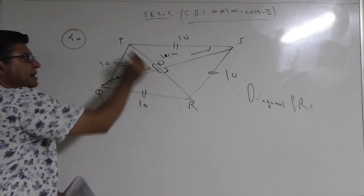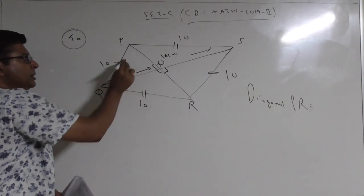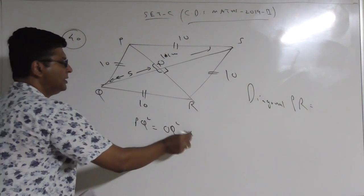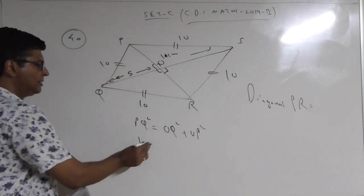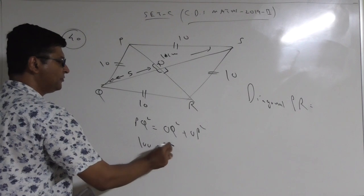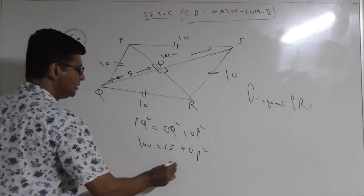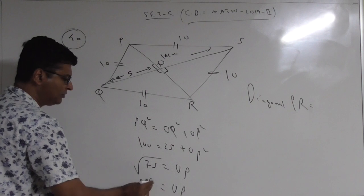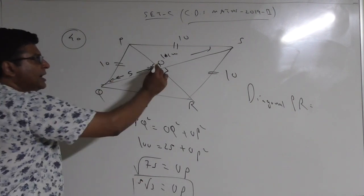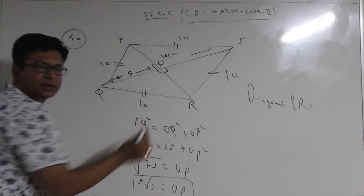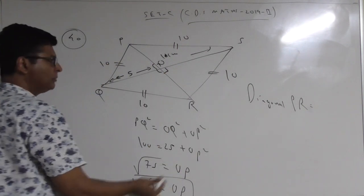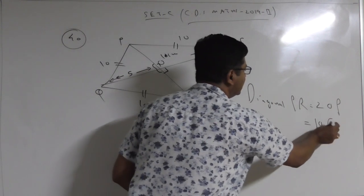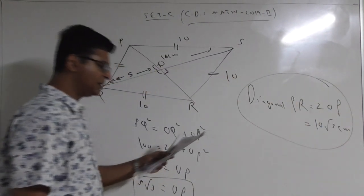To find the length of diagonal PR, use Pythagoras theorem. Since this is a right angle triangle at O: PQ² = OQ² + OP². PQ = 10, so PQ² = 100. OQ = 5 (half of QS), so OQ² = 25. Therefore OP² = 75, giving OP = 5√3. Since the diagonal PR is bisected at O, the full diagonal PR = 2 × 5√3 = 10√3 cm.